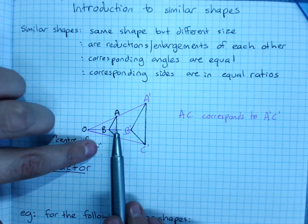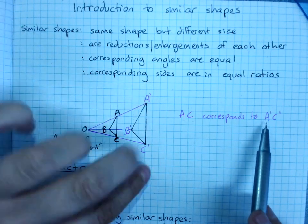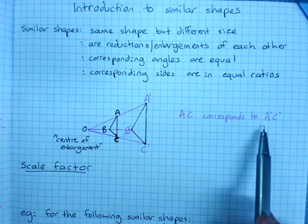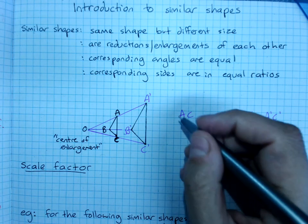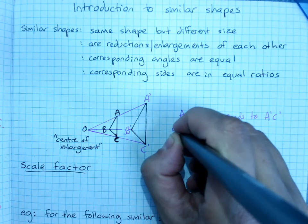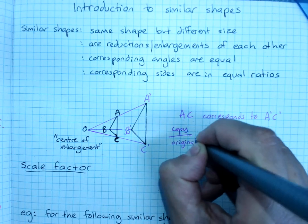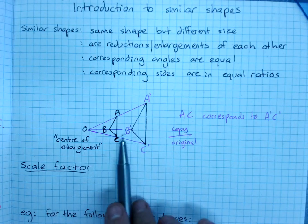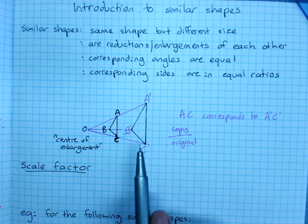This says that if I measure side AC and side AC on the new shape, write the ratio of the copy over the original. This is an enlargement, so this one's the copy. And when you've got the prime, that says that's the copy shape.